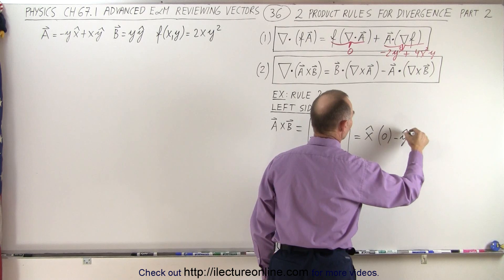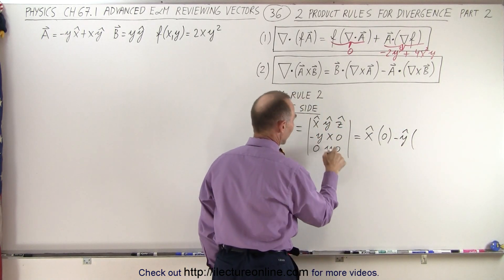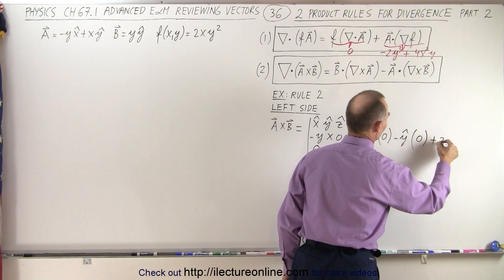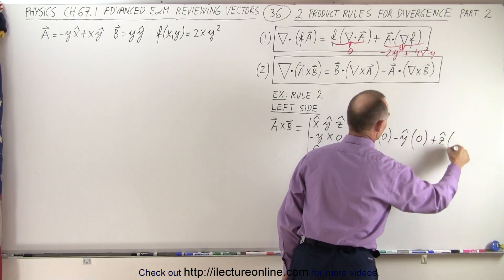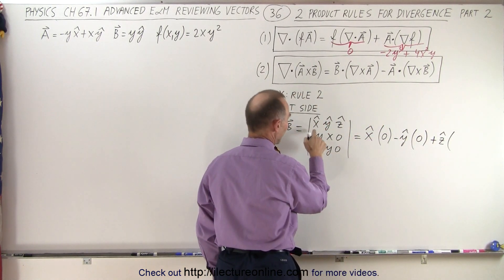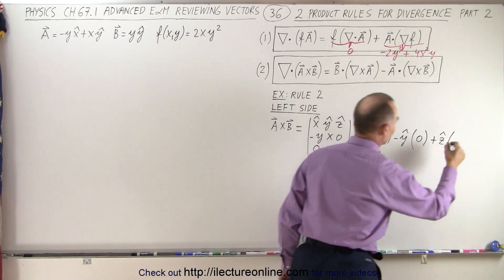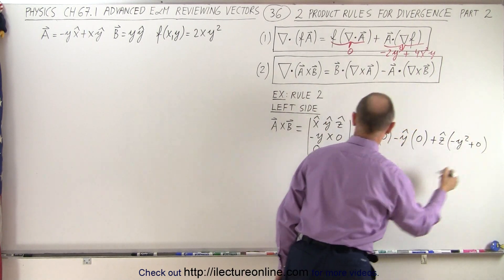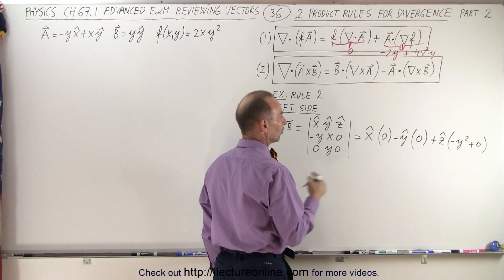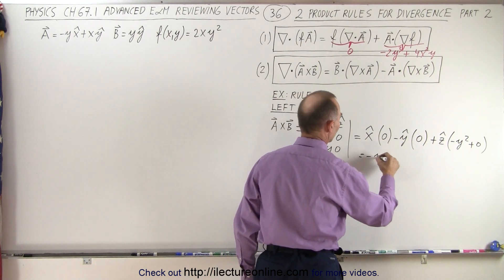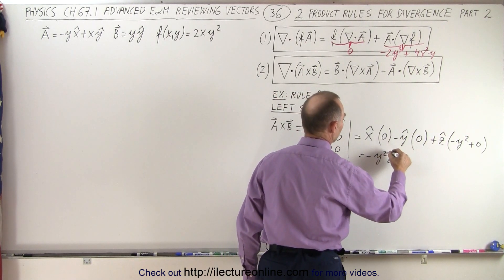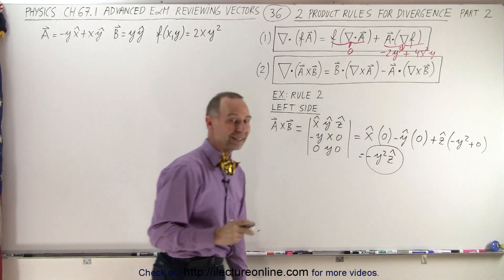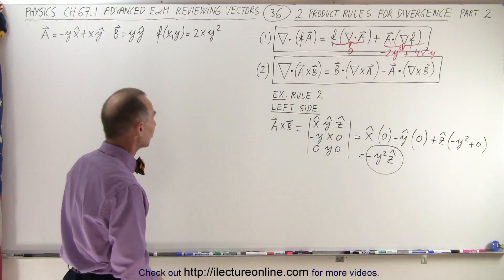Minus Y unit vector times minus Y times 0, that's 0. And plus Z unit vector times minus Y times Y, that's minus Y squared, plus 0 because X times 0 is 0. So we end up with minus Y squared in the Z direction. That's the cross product of vector A and vector B.